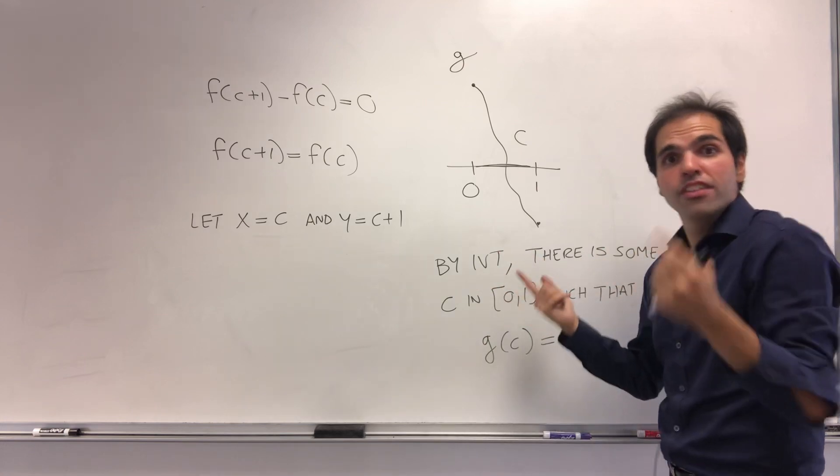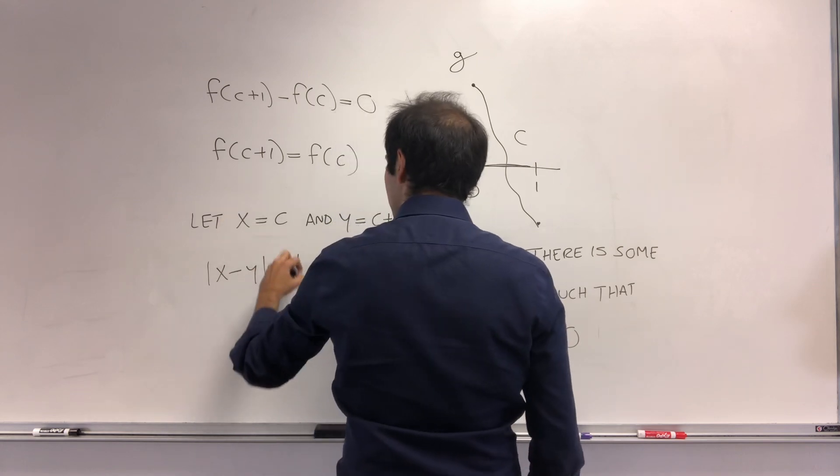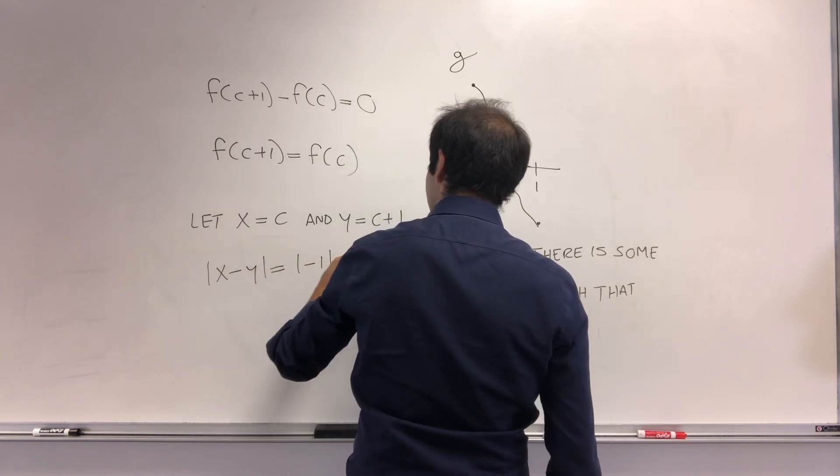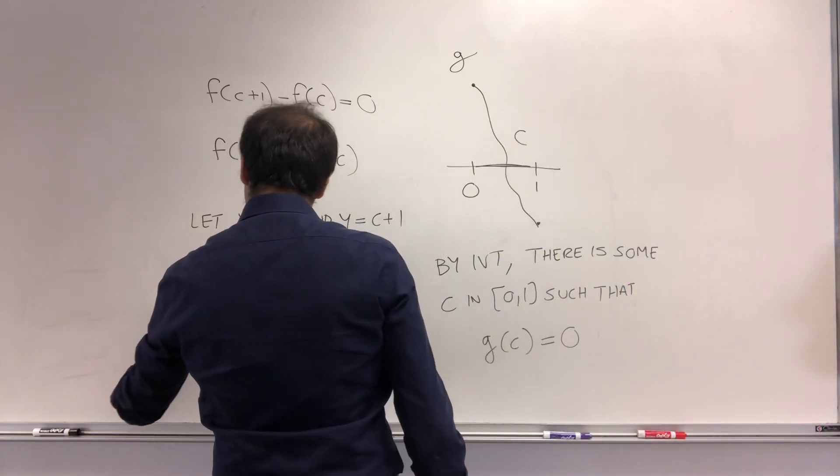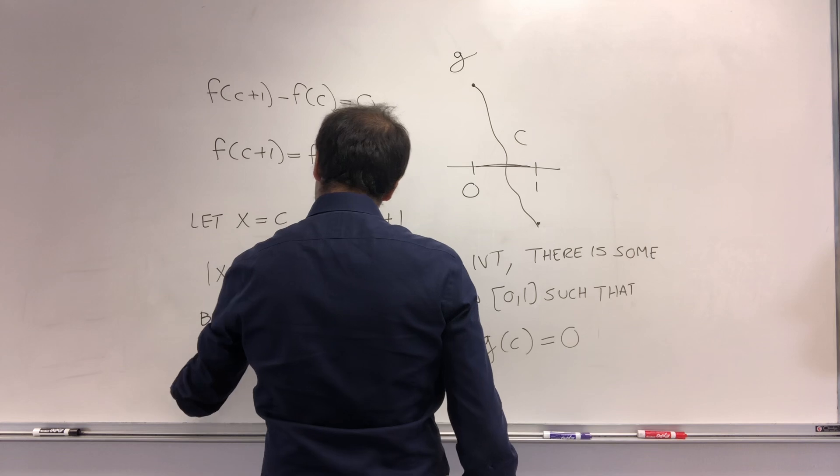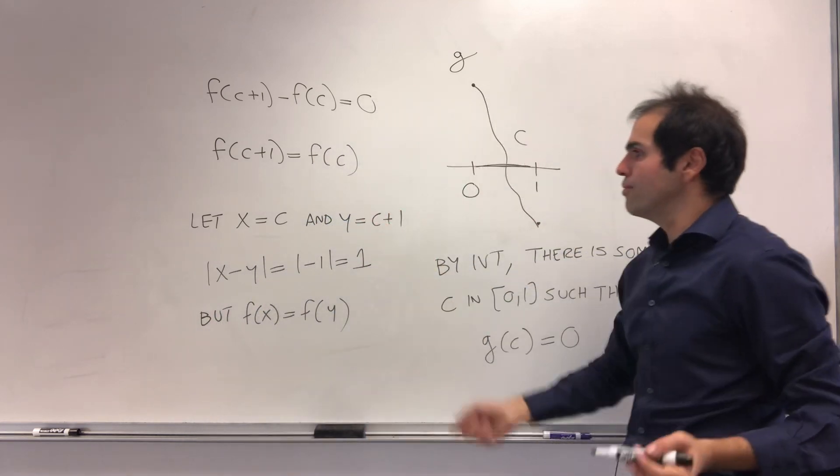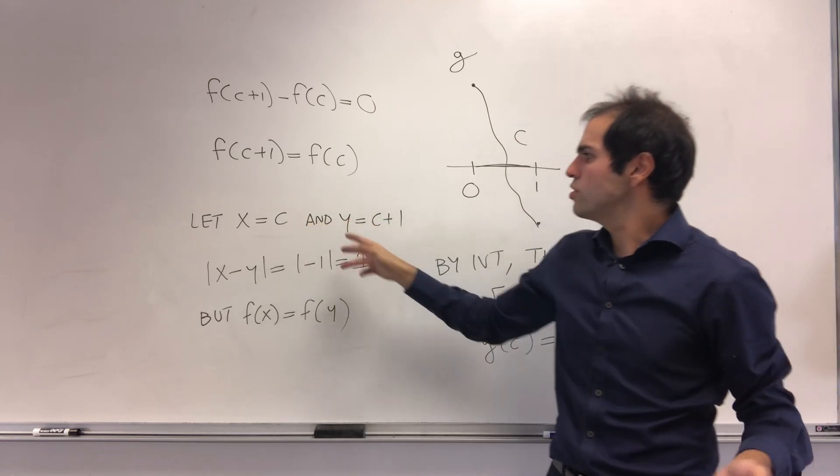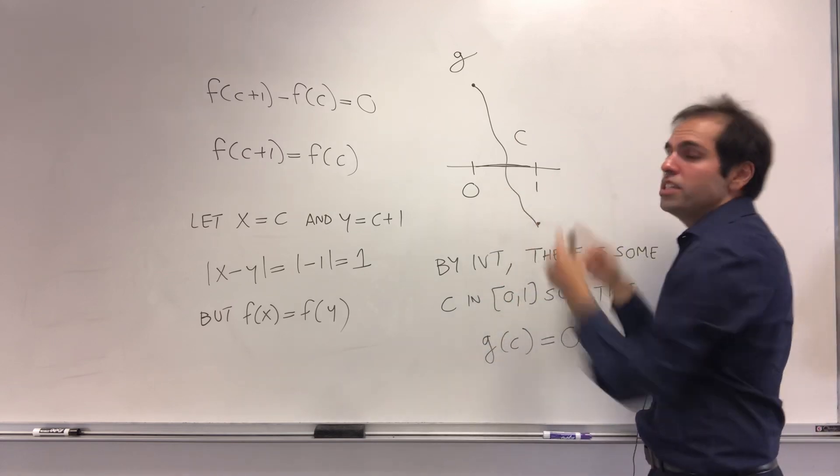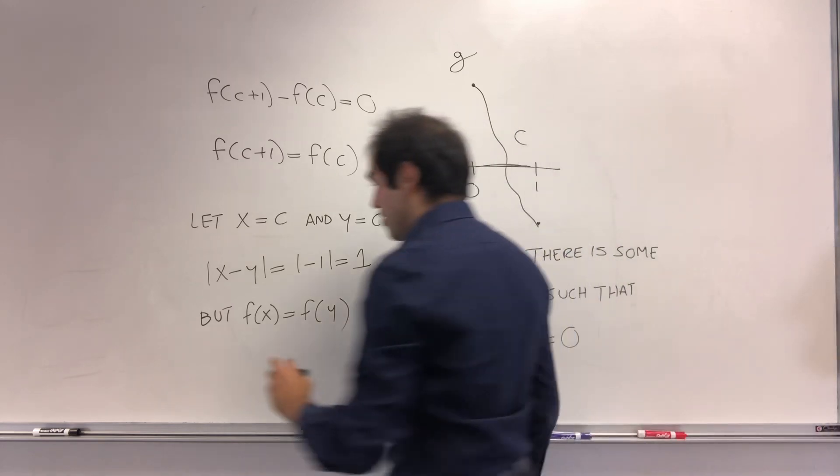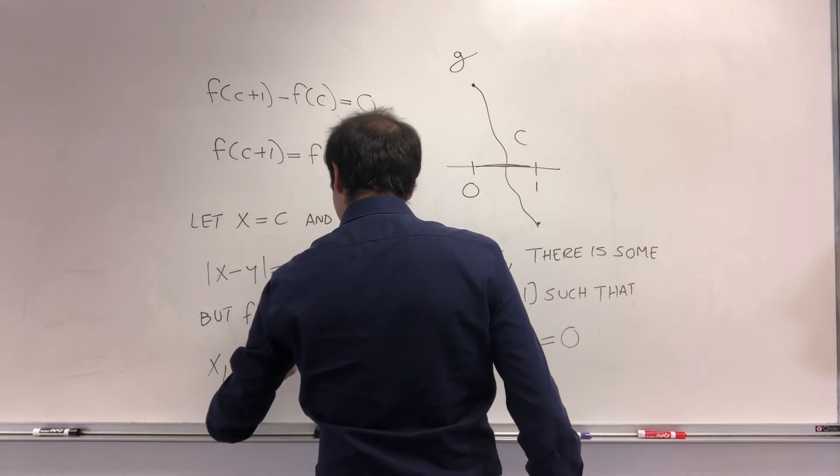Then the difference is 1. So |x - y| = |-1| = 1. But f(x) = f(y). And not only that, but x and y are in the interval [0,2]. They're actually between 0 and 2, between those values where f(0) = f(2).